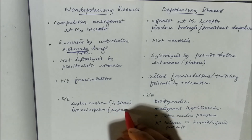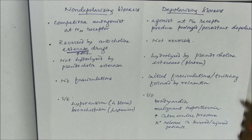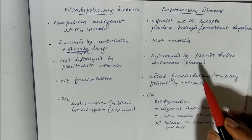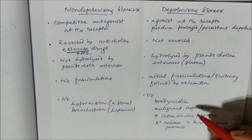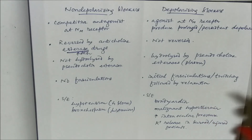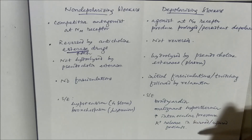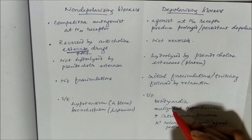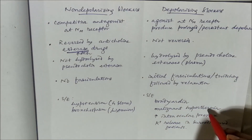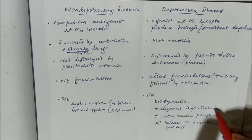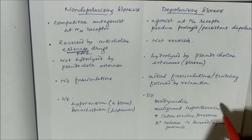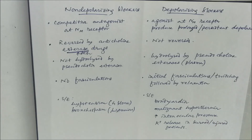Side effects of depolarizing blockers include bradycardia, malignant hyperthermia, increased intraocular pressure, and potassium release in burned or injured patients, which can cause cardiac arrhythmia. Malignant hyperthermia is an inherited condition in which there is a mutation in calcium release channels — only then will it occur. Thank you.